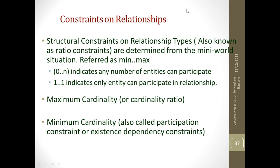Let us understand the structural constraints on relationship types. Structural constraints are referred to as ratio constraints and are indicated as min..max. For example, zero..n means any number of entities can participate, and one..one means only one entity can participate. I also define the maximum cardinality, called the cardinality ratio, and the minimum cardinality, called the participation constraints.